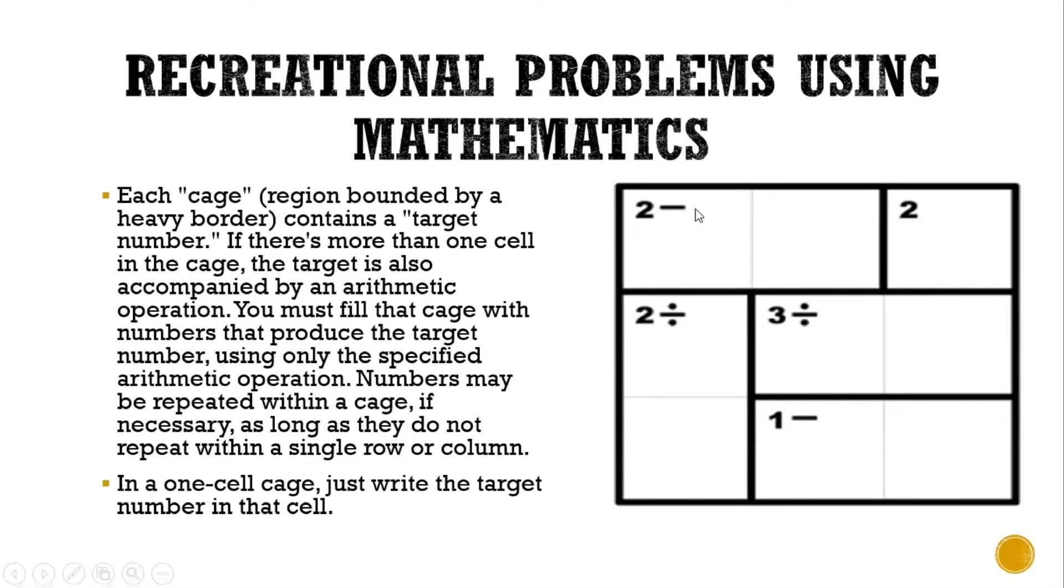In this 3x3 puzzle, we're only using numbers from 1, 2, and 3. What are the 2 numbers, since there are two cells, that when we subtract will equal 2? You're only choosing from the numbers 1 to 3, since it's a 3x3 puzzle. Numbers may be repeated within a cage, so long as they do not repeat in a single row or column. In a 1-cell cage, just write the target number in that cell. We have 2 as the target number with no operation, so we just write 2.